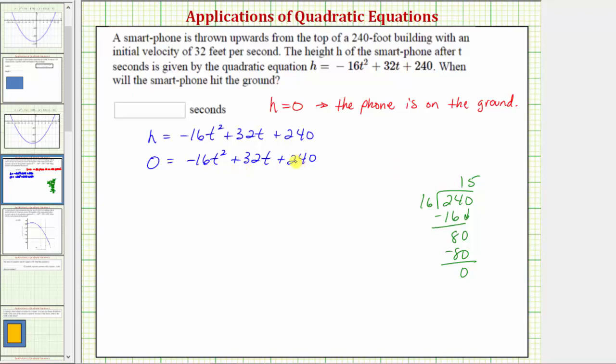Now we know 16 is the greatest common factor of these three terms. But because the t squared term is negative, let's factor out negative 16. So we have zero equals negative 16 times the quantity. We factor negative 16 out of negative 16t squared, we're left with t squared. If we factor negative 16 out of positive 32t, we're left with negative 2t. If we factor out negative 16 from 240, we'd be left with negative 15. And we can always check this by distributing.